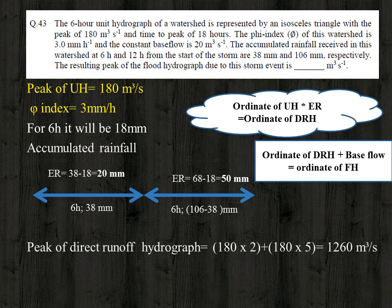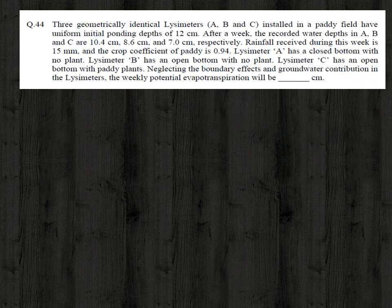The base flow is given as 20 cubic meter per second. So the peak of the flood hydrograph equals 1260 + 20 = 1280 cubic meter per second.